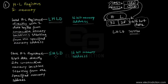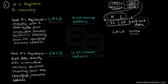We can summarize the SHLD instruction as follows: SHLD stands for Store HL registers Directly. What this instruction does is store the 16-bit data content of the H and L register pair directly into consecutive memory locations starting from the specified memory address. Let's give an example.